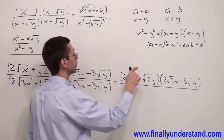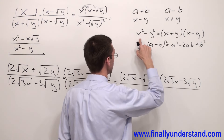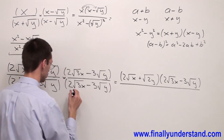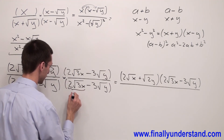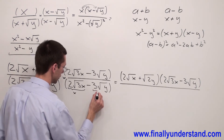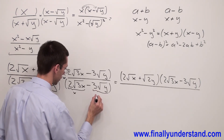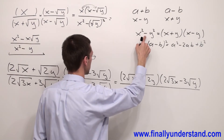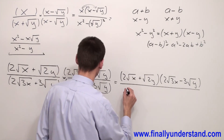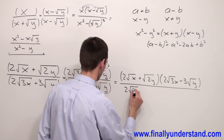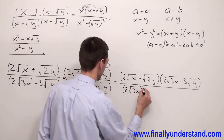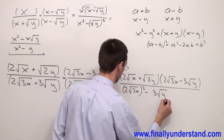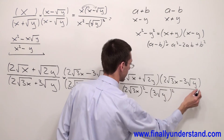The rule says anytime I multiply the expression by its conjugate I'm going to obtain the difference of the perfect squares. I consider 2 square root of 3x as my first term and 3 square root of y as my second term. The formula says the first term has to be squared and subtract the square of the second term: (2 square root of 3x) squared minus (3 square root of y) squared.